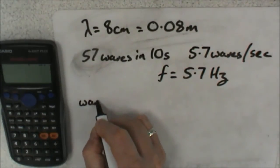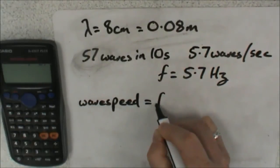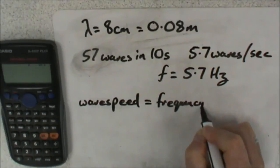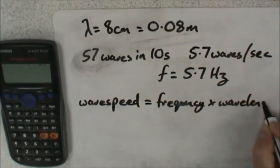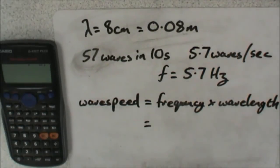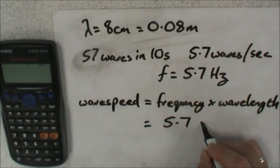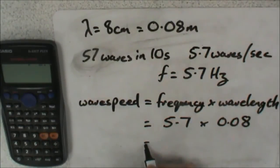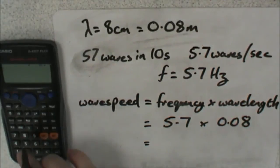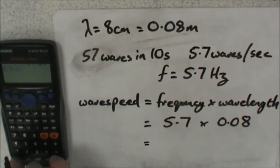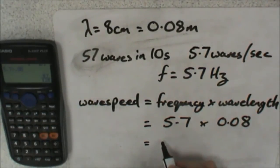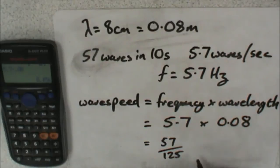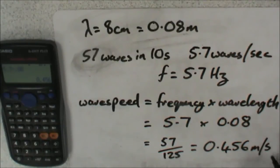So now, using wave speed equals frequency multiplied by wavelength, we substitute in the numbers that we have. So we've got a frequency of 5.7 and a wavelength of 0.08 meters. We can do our calculations. So on our calculator, 5.7 multiplied by 0.08 gives us 57 over 125. Now that's not much use, so we press the S to D button on our calculator, which gives us 0.456 meters per second. And that's the speed of our waves in the water.